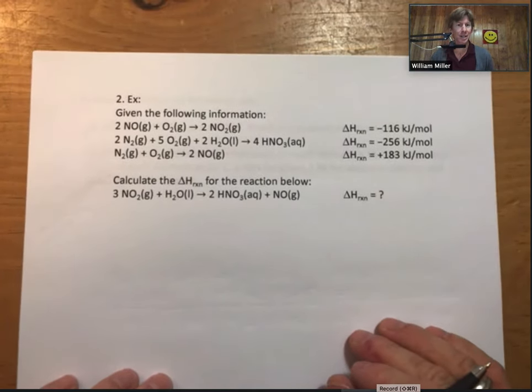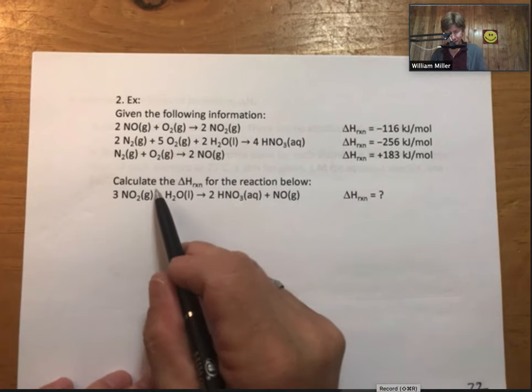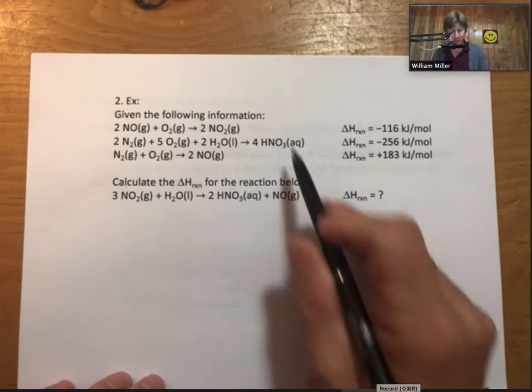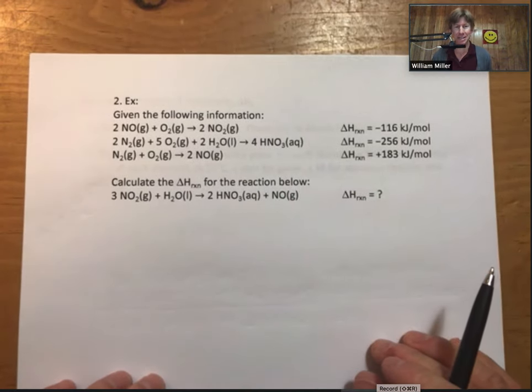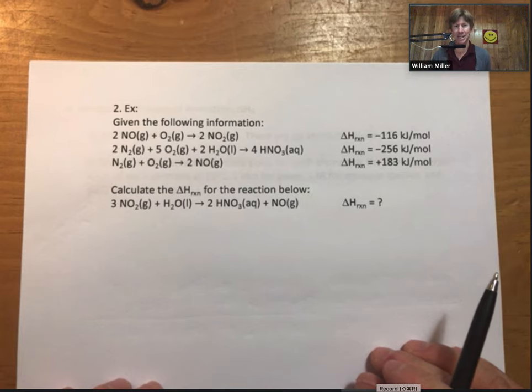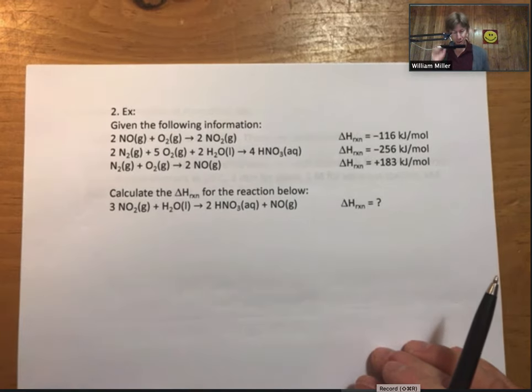Here's another puzzle. Here's another Hess's law problem. It says calculate delta H reaction for the reaction here based on three reactions now. So this is a more complicated example. It's a more complicated puzzle. Same idea though. I'm going to work this one.